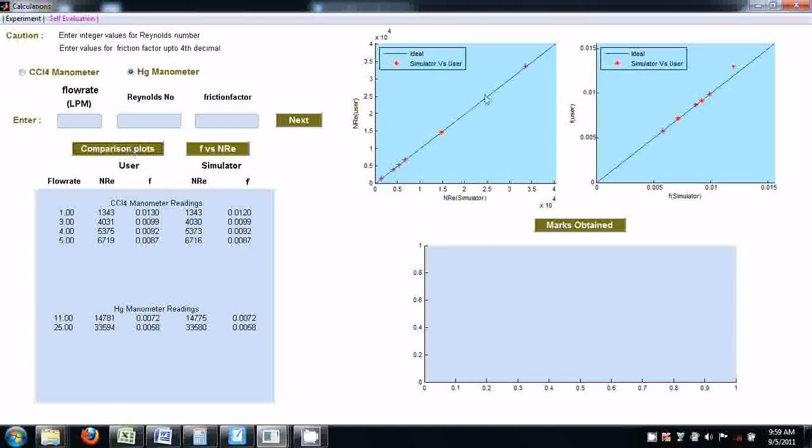Then go for comparison plots, click on this. These are the comparison plots. This is a plot between Reynolds number calculated by the simulator and Reynolds number calculated by the user. Points are almost on the diagonal—this diagonal is ideal if both values are coinciding exactly.